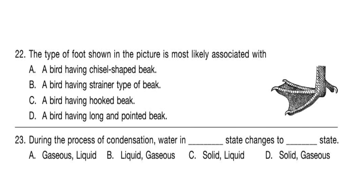Question 22. The type of foot shown in the picture is most likely associated with? Looking at the picture, we can see it is a webbed foot, which is found in birds that spend much of their time on water. Such birds can have a strainer type of beak. So Option B — a bird having a strainer type of beak — is the correct answer.